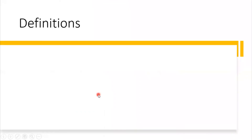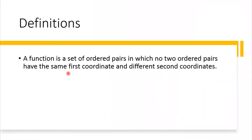So, functions — what are functions? We start with the definition. A function is a set of ordered pairs in which no two ordered pairs have the same first coordinate and different second coordinates. For example, if you are given ordered pairs like (2, 4) and (2, 6), that set cannot be considered a function because we have the same first coordinate, which is 2, but different second coordinates, which are 4 and 6. So, that set is not a function.